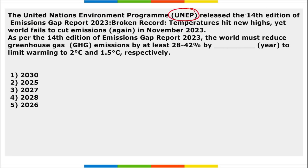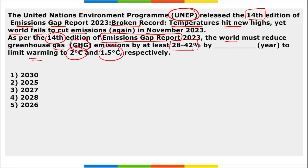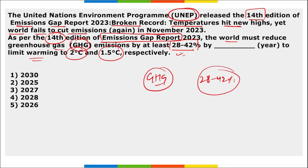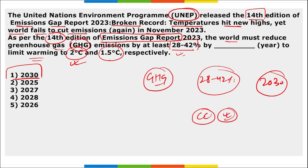UNEP — the United Nations Environment Programme — released the 14th edition of the Emissions Gap Report titled 'Broken Record: Temperatures Hit New High, Yet World Fails to Cut Emissions.' As per the report, the world must reduce greenhouse gas emissions by at least 28% to 42% by 2030 to limit global warming to 2°C and 1.5°C respectively.